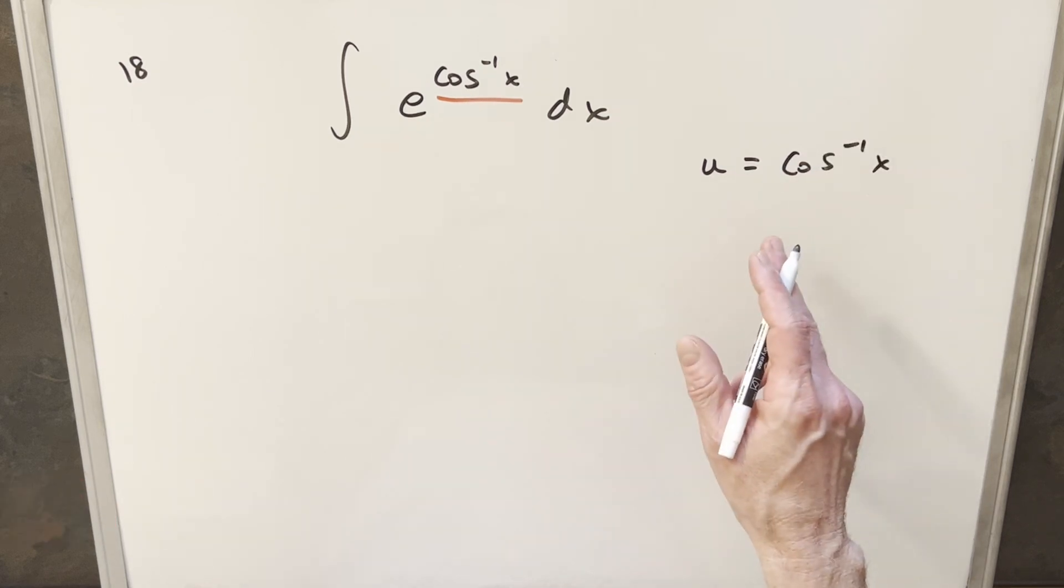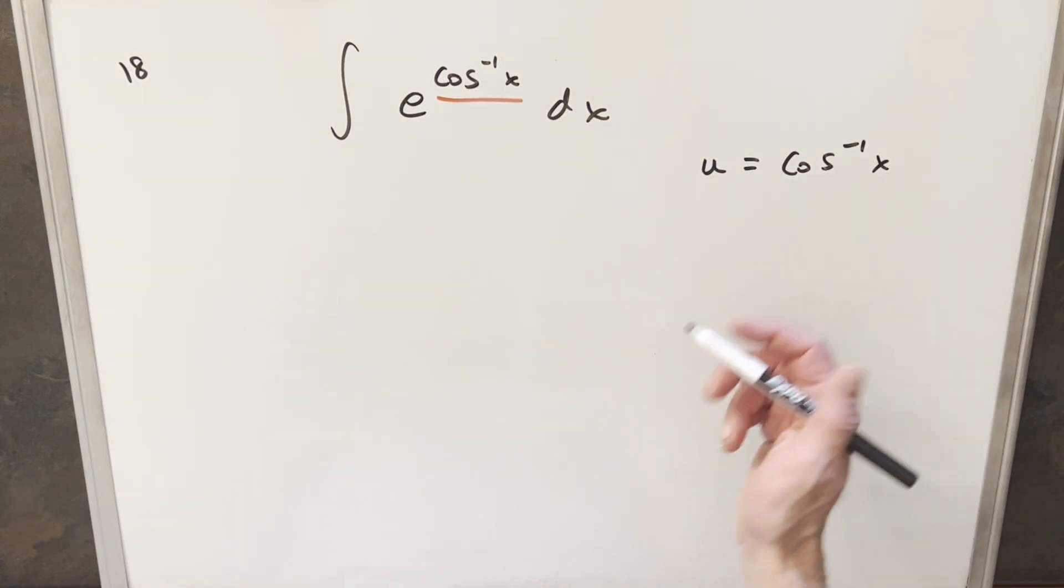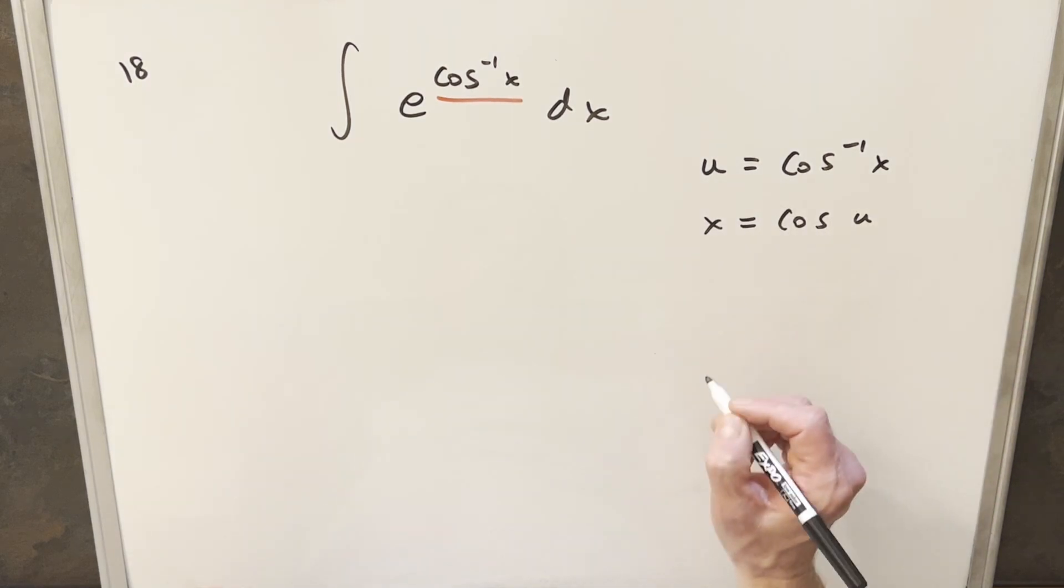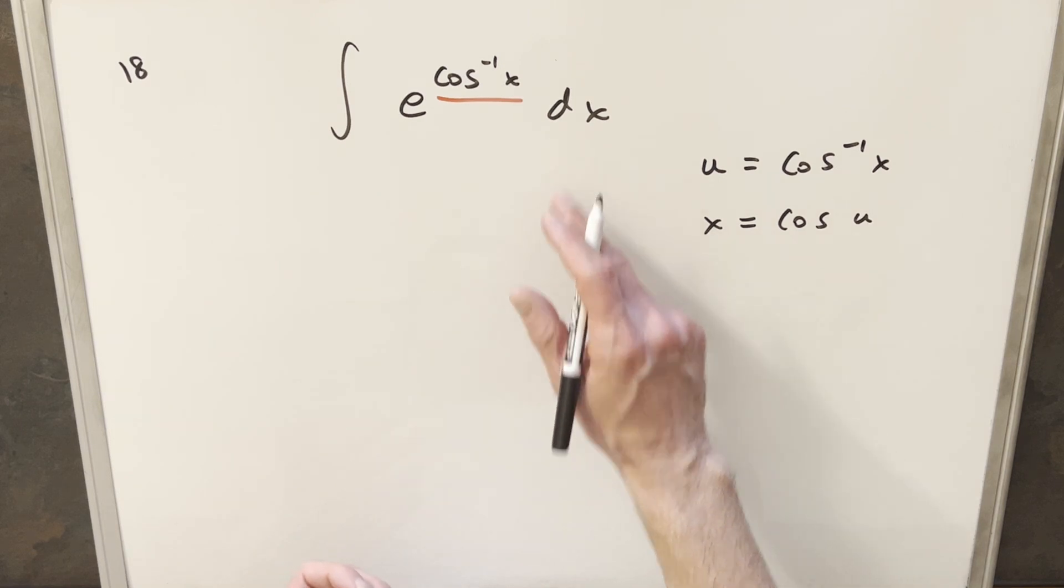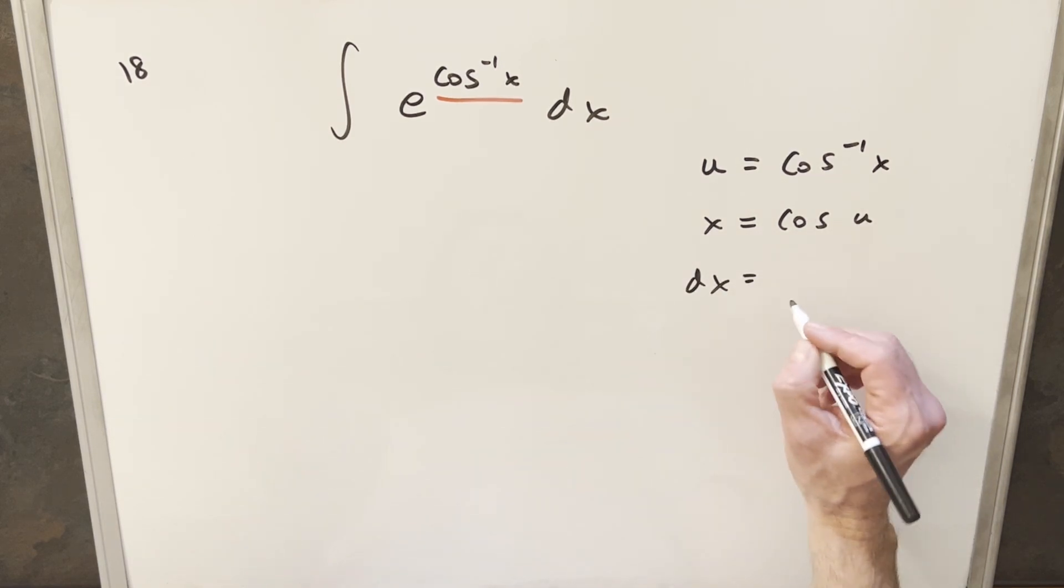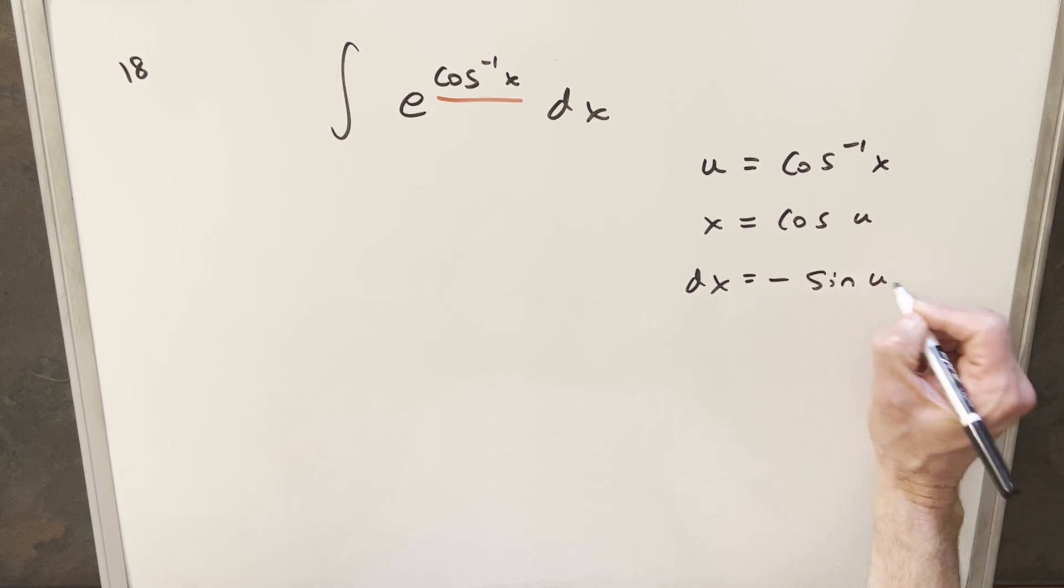So I'm going to say, we're going to set u equal to arccos(x). But what I can do is rearrange it. Taking cosine of both sides, we find that x is just going to be equal to cos(u). Then we want a dx value. So for dx, taking the derivative, the derivative of this is just going to be minus sin(u) du.